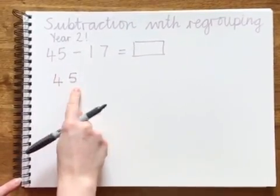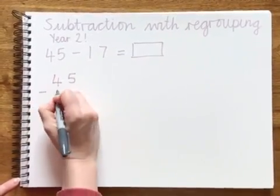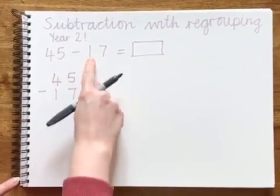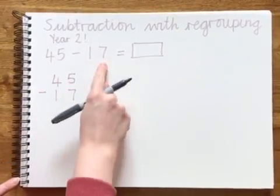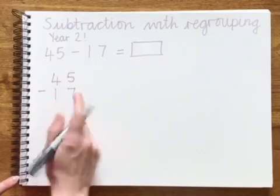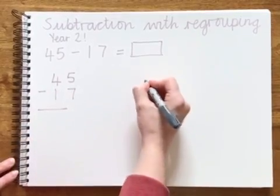So I'm going to write 45 take away 17, making sure that my 10 is under the 40 and my 7 is under the 5 because those are my 10s and 1s. Then I'm going to put that into a 10s and 1s column.